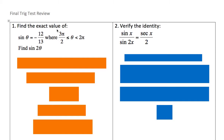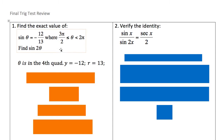The first question: find the exact value of sine of theta equals negative 12 over 13, where your angle is between 3π/2 and 2π — they want us to find sine of 2θ, our double angle. So a couple things you need to figure out is what quadrant this is talking about. 3π/2 is your negative y-axis and 2π is your positive x-axis, so it's in the fourth quadrant. Because sine θ = −12/13, we know y is negative 12 and r is 13, so we just have to find x.